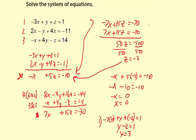Now we have our answer: x is 0, y is 3, z is negative 2. That's our ordered triple. You can mentally check in a couple different equations to make sure.